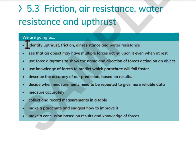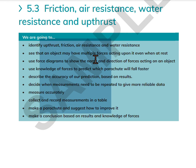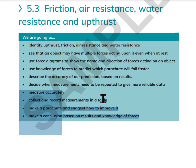We are going to identify upthrust, friction, air resistance, and water resistance. We'll see that an object may have multiple forces acting upon it even when at rest. We'll use force diagrams to show the name and direction of forces acting on an object, use knowledge of forces to predict which parachute will fall faster, describe the accuracy of our prediction based on results, decide when measurements need to be repeated to get more reliable data, collect and record measurements in a table, make a parachute and suggest how to improve it, and make a conclusion based on results and knowledge of forces.